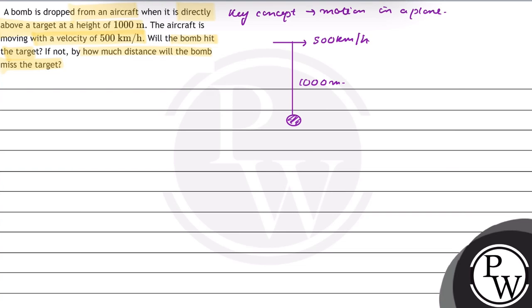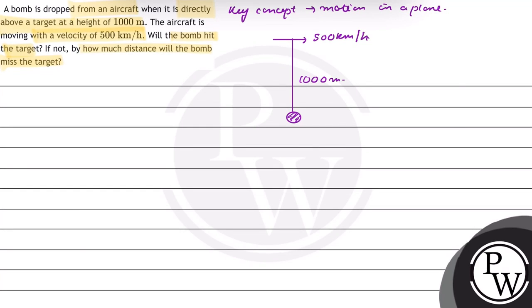Since the aircraft has dropped, its horizontal velocity is 500 km per hour and the bomb travels the vertical distance of 1000 meters in time t.